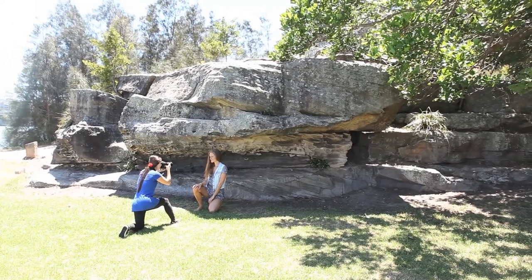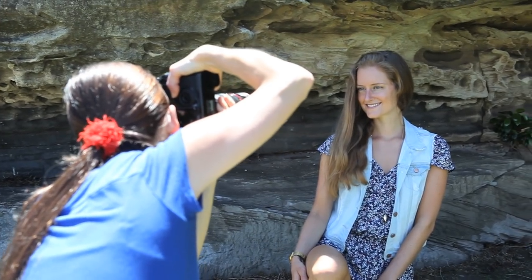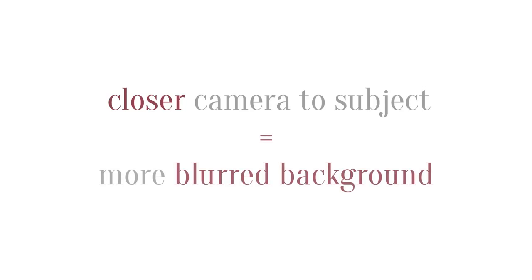Now let's look at the distance between the camera and the subject. Both of these shots are at 40 millimeters and an aperture of f5.6. The first shot is taken from about two and a half meters from the subject, and this shot is about one and a half meters. You can clearly see a more blurred background the closer you, the photographer, are to the subject.